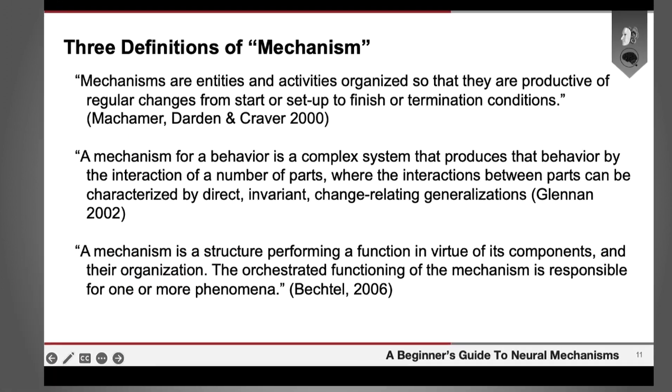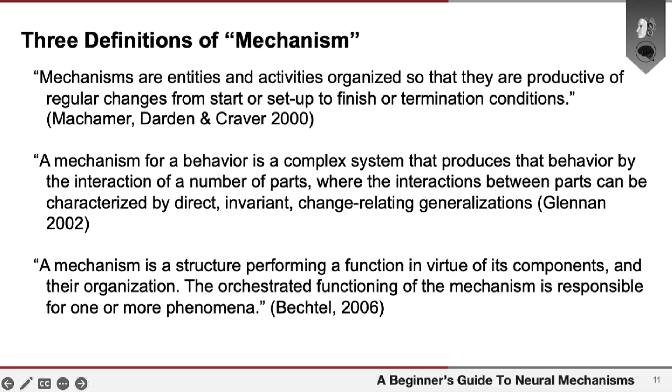On this slide, I've given you three definitions of mechanism which have been influential in recent discussions amongst philosophers. You'll notice that these definitions use very general terms. They're not talking about biological systems or machines or artifacts. They're talking in general terms such as entities and activities and laws of nature and processes. But the core idea is that what mechanisms are, are delimited sets of causal interactions that produce a phenomenon.